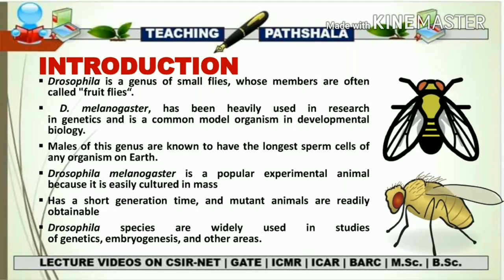Drosophila melanogaster is a popular experimental animal because it is very easy to culture in mass, its generation time is very small, and the overall life cycle is about 21 days. It has a short generation time and mutant animals are readily obtainable — you can see results of mutations in a short duration. Drosophila species are widely used in studies of genetics, embryogenesis, and other areas.